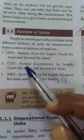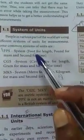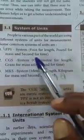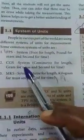You will read this abbreviations. FPS means Foot for length, Pound for mass, and second for time.